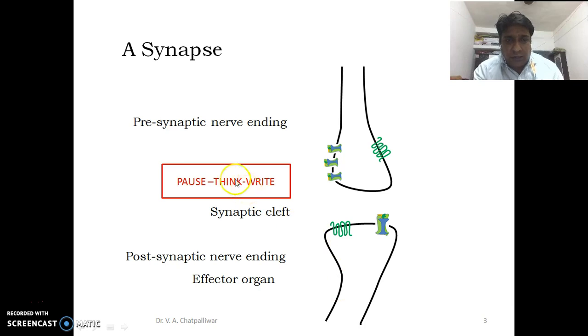The point of junction is termed as synapse. This diagrammatic representation depicts a particular synapse. A synapse essentially contains a presynaptic nerve ending which is a part of one neuron and postsynaptic nerve ending which is essentially part of another neuron.